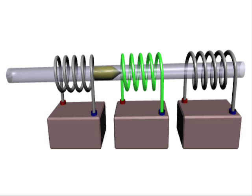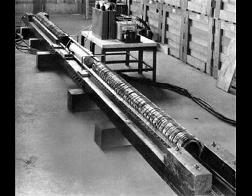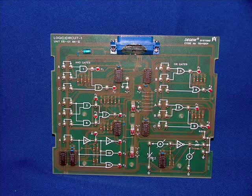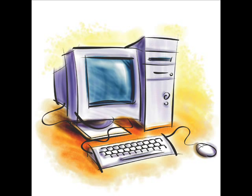Then the next coil activates, attracting the bullet further, and then the next, depending on how many coils there are. The momentum the bullet now has carries it through the barrel and sends it flying off to its target at very high speeds. There are a number of ways to get the coils to turn off in time, but the most efficient way is to use a logic circuit — a very simple computer — to time the activation of the coils.